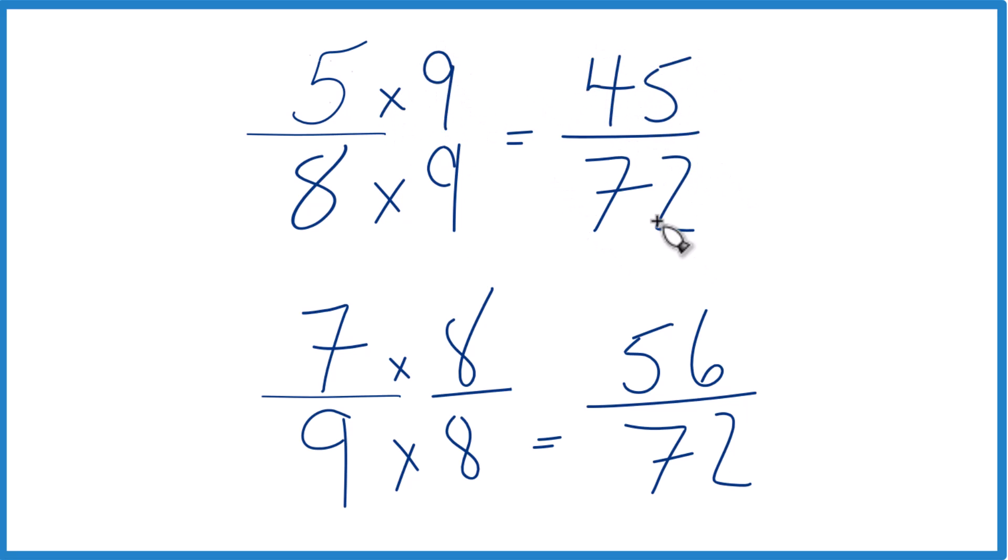And now we have the same denominator. We compare the numerators. 56 is greater than 45. 56 seventy-seconds is going to be greater than 45 seventy-seconds, and these are equivalent here.